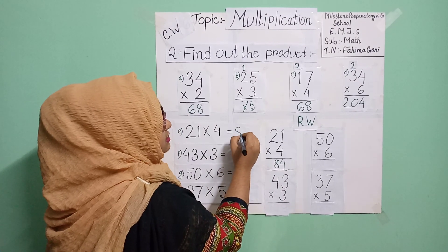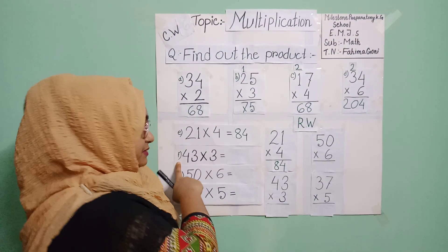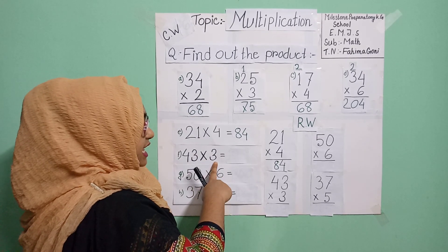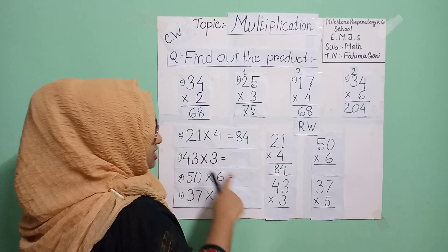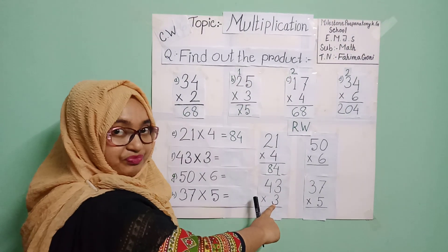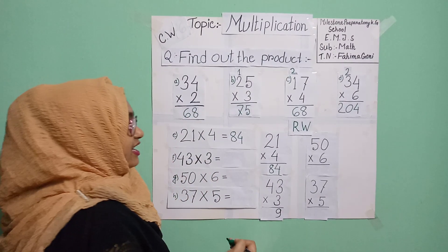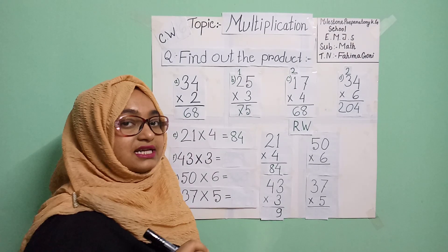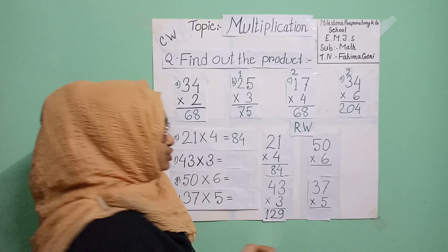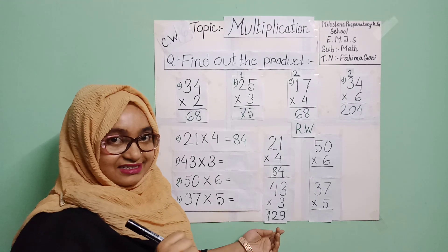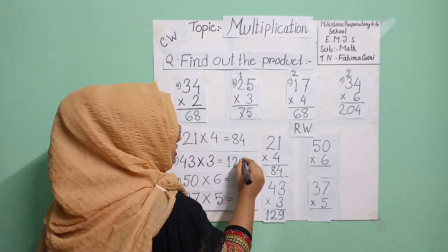Okay students, now problem F. The front number is 43 and after the multiplication sign is 3. I have written the front number on the upper side and 3 on the lower side. Three threes are nine, and three fours are twelve. So the answer is one hundred and twenty-nine. I will write it beside the side-by-side: 129.